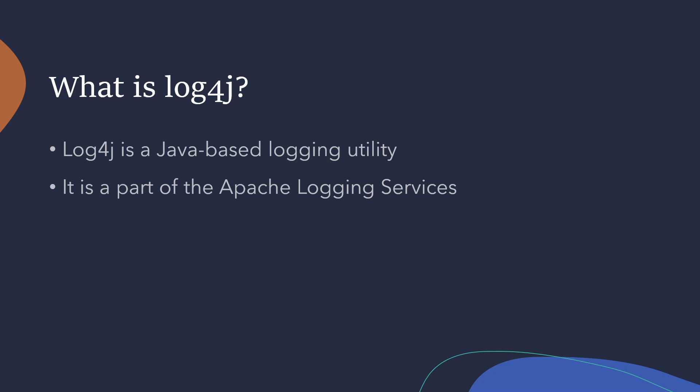Starting off, let's talk about what log4j even is. Log4j is a Java-based logging utility which is part of the Apache logging service. It's used in a lot of Java applications for simply logging data while an application is running — logging information about the application, errors, debugging information — things to help developers troubleshoot their application in production. This is used in a lot of different areas; for instance, it's used in things like Spring Core, and a lot of other Java projects use log4j as a default component.